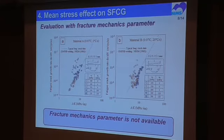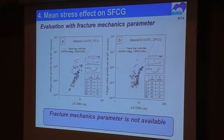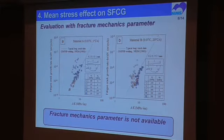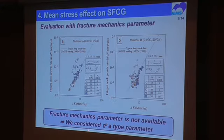I'd like to show the small fatigue crack growth data. These are the data for materials A and B. This small fatigue crack growth data is evaluated using the fracture mechanics parameter ΔK. Open markers are obtained under zero mean stress conditions and solid markers under tensile mean stress conditions. It is well known that fracture mechanics parameters are difficult to use for evaluating small fatigue crack growth rate, and this result is also difficult to evaluate by ΔK.